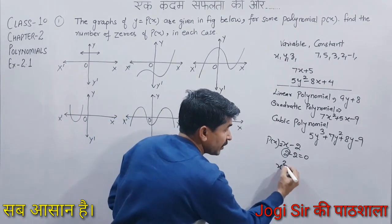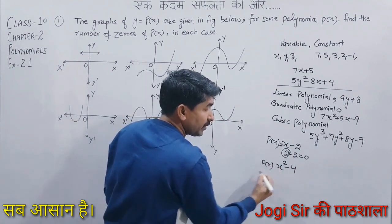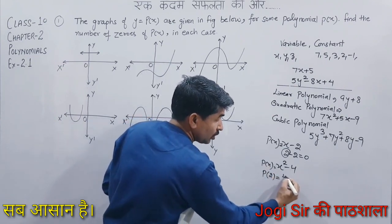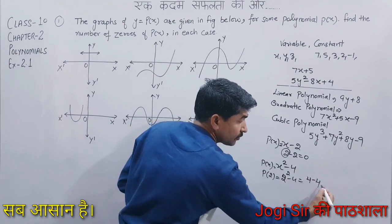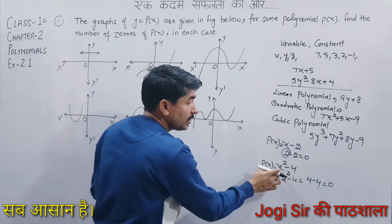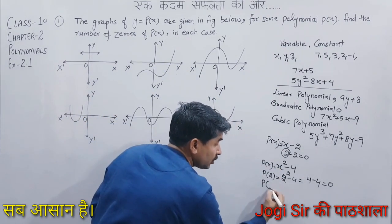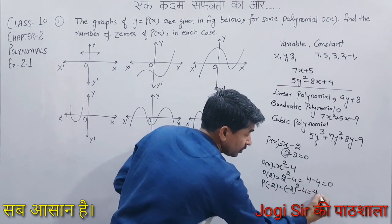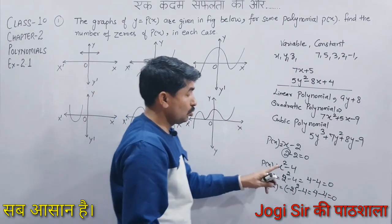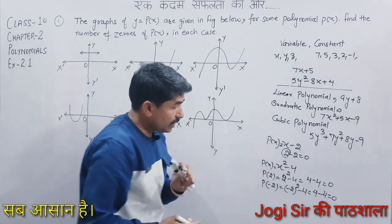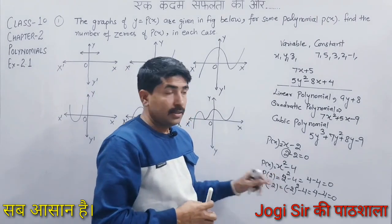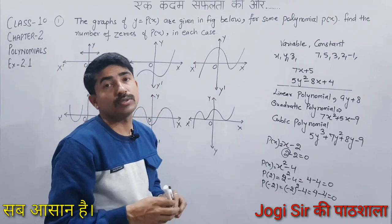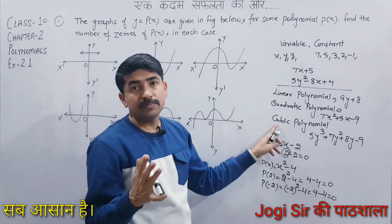Let's take another example: x squared minus 4, denoted by px. If I put x equal to 2, it becomes 2 squared minus 4, that is 4 minus 4, which equals 0. So 2 is a zero. Also, if I put x equal to minus 2, then minus 2 squared minus 4 is again 4 minus 4, which equals 0. So this polynomial has 2 zeros. The number of zeros depends on the degree — px has degree 2, so it has 2 zeros. A cubic polynomial will have 3 zeros.